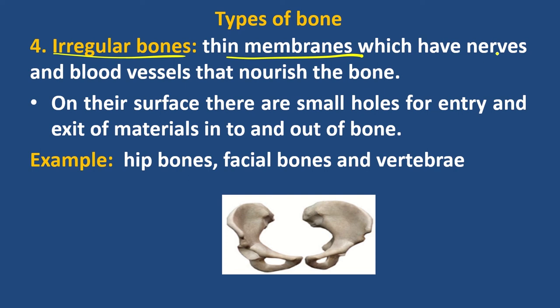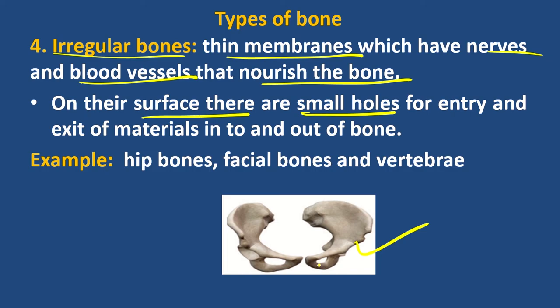The periosteum is a thin membrane which has nerves and blood vessels around the bone. There are small holes in the surface for entry and exit of materials in and out of bones.